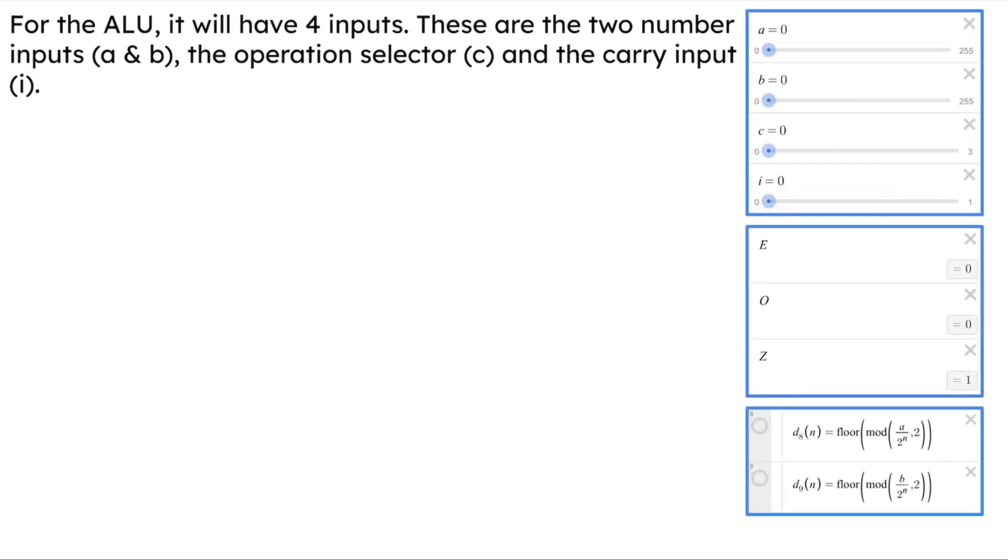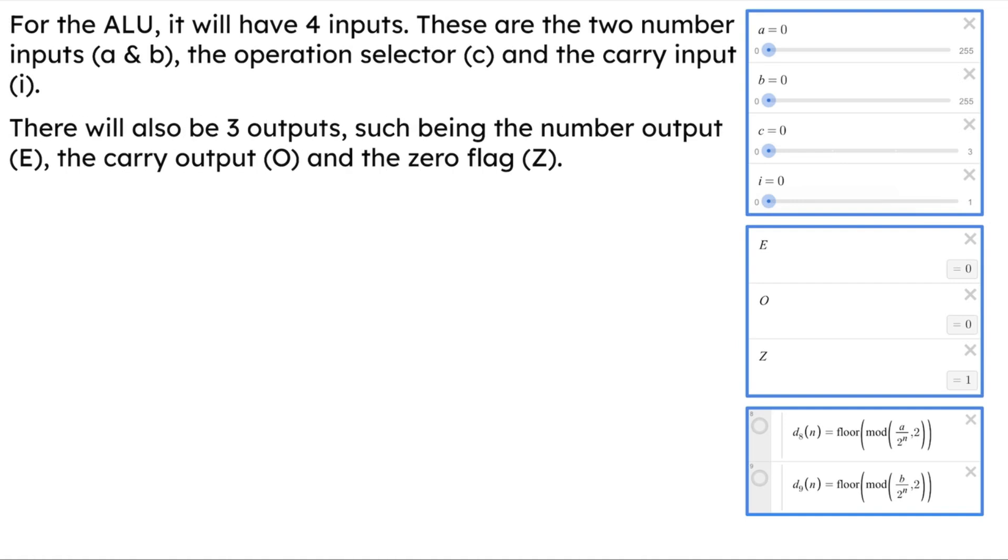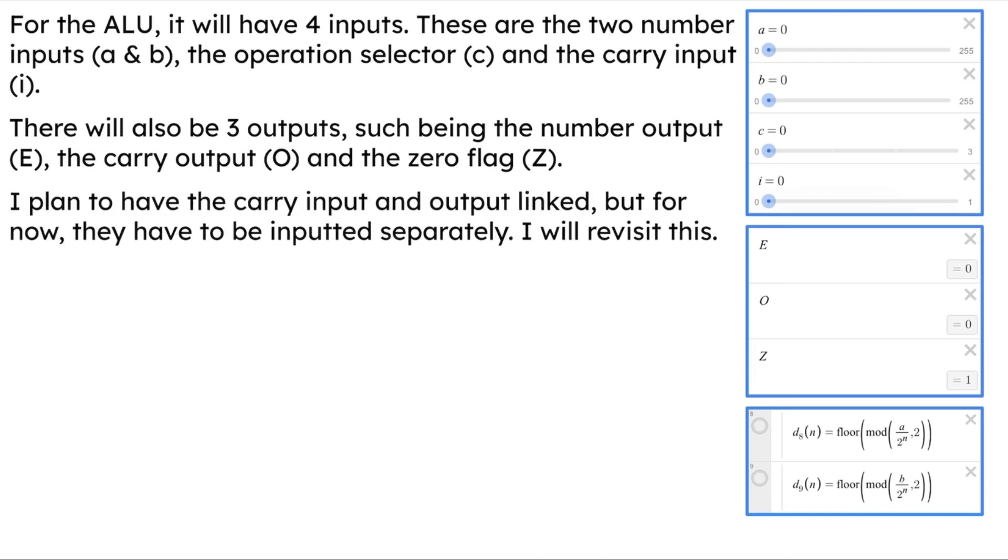For the ALU it will have four inputs: these are the two number inputs, the operation selector, and the carry input. There will also be three outputs: the number output, the carry output, and the zero flag. I plan to have the carry input and output linked, but for now they have to be inputted separately. I will revisit this.